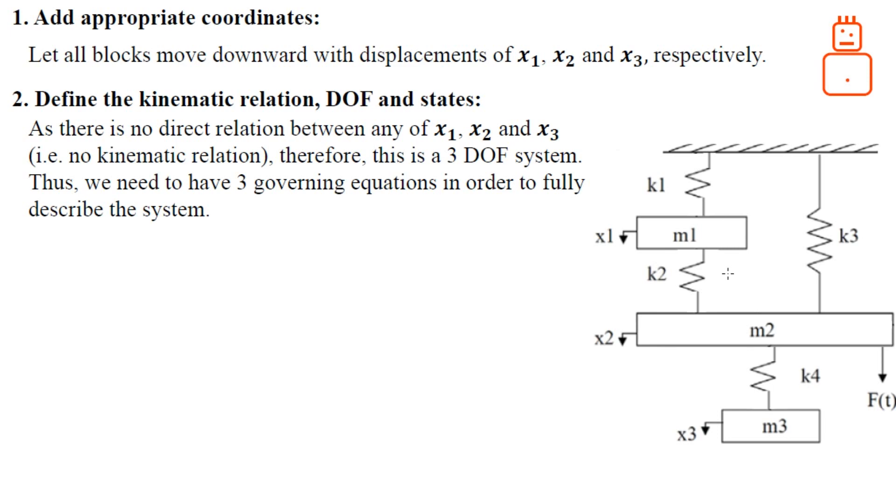Since it is a three degree of freedom system, you are expected to derive three governing equations in order to fully describe this system. The states are just the corresponding derivatives of the coordinates. We have the position, velocity, and acceleration of m1, m2, and m3.